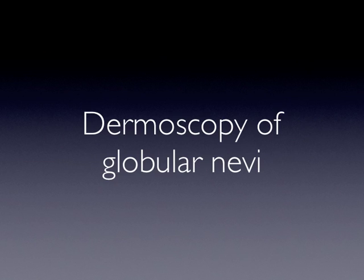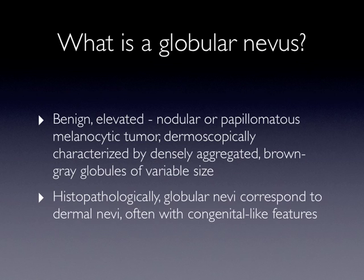In this podcast, we speak about the dermoscopy of globular nevi. A globular nevus is a benign, elevated, nodular or papillomatous melanocytic tumor, dermoscopically characterized by densely aggregated brown-gray globules of variable size.